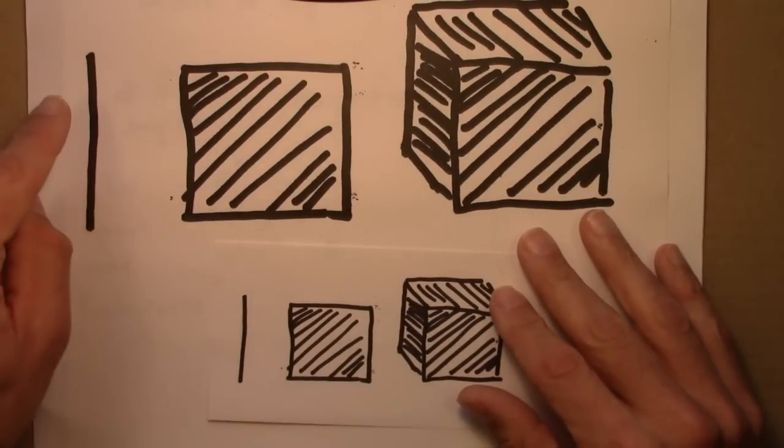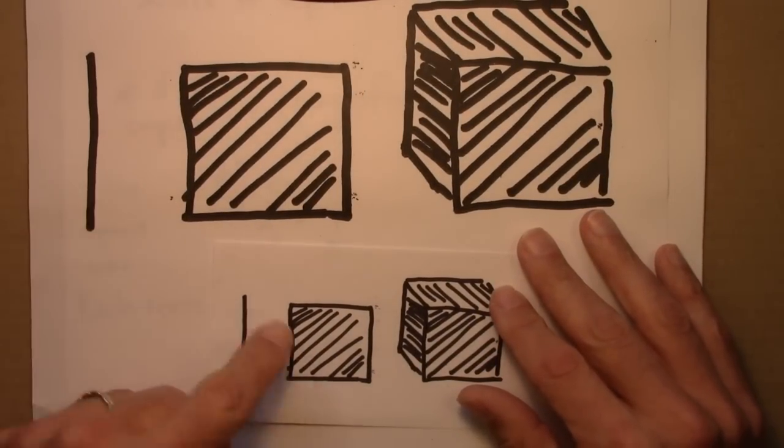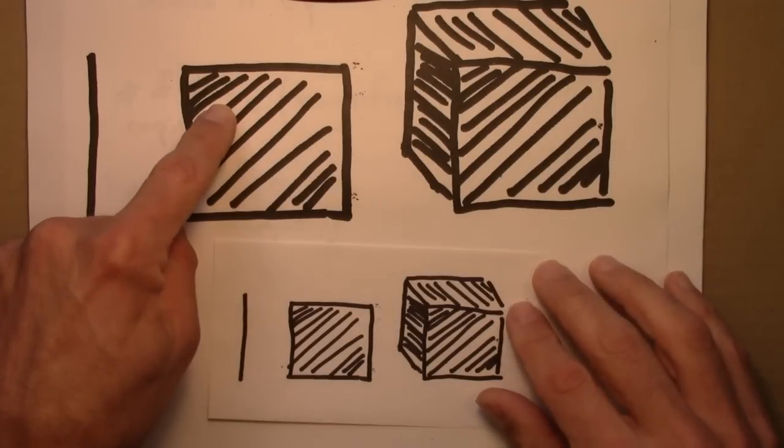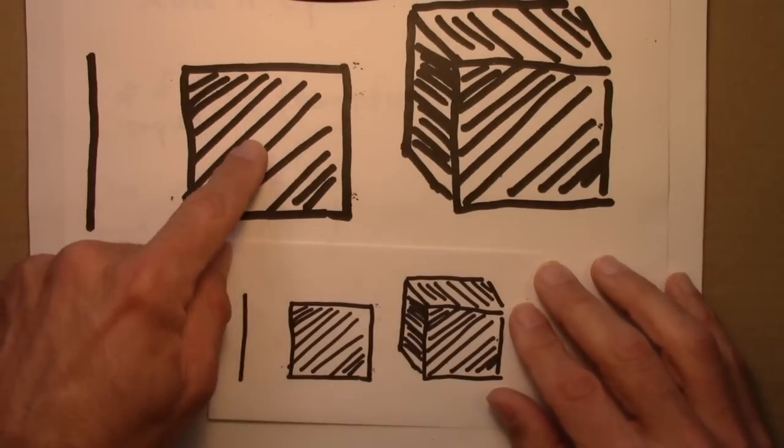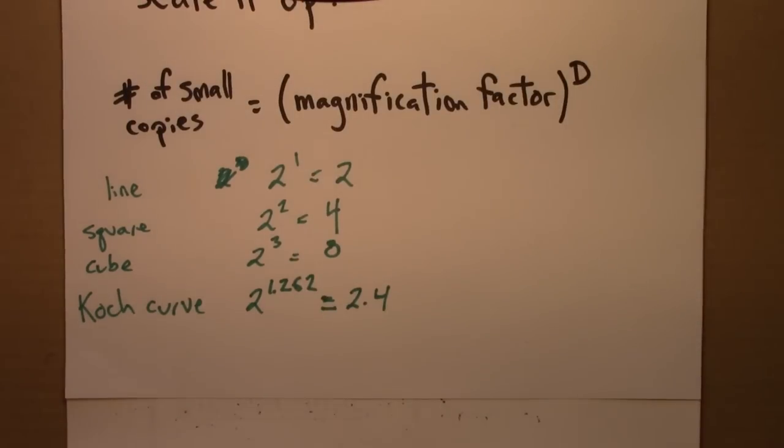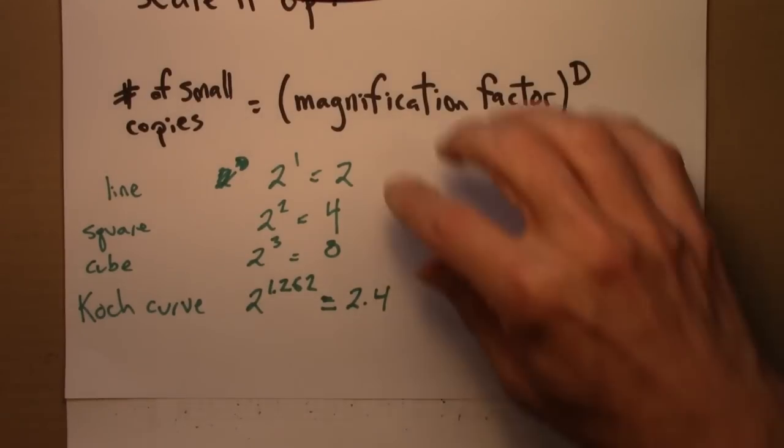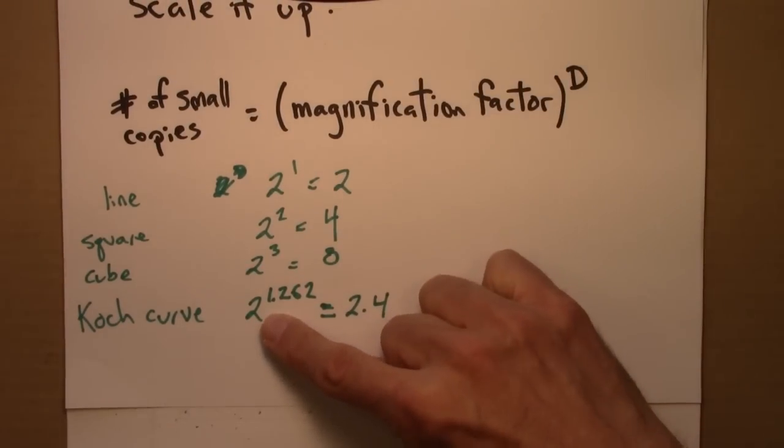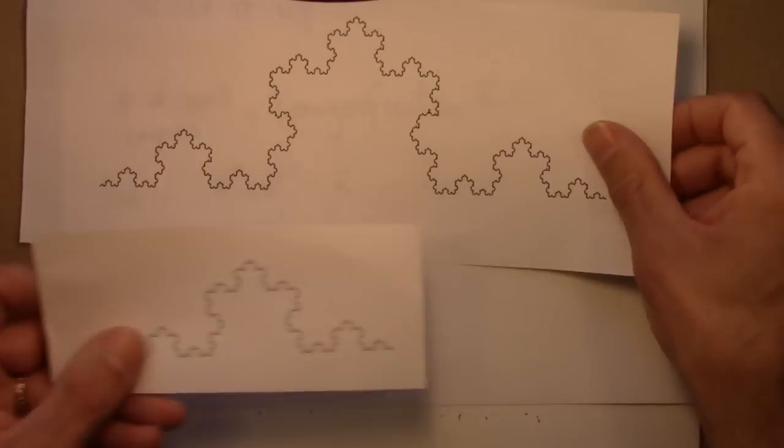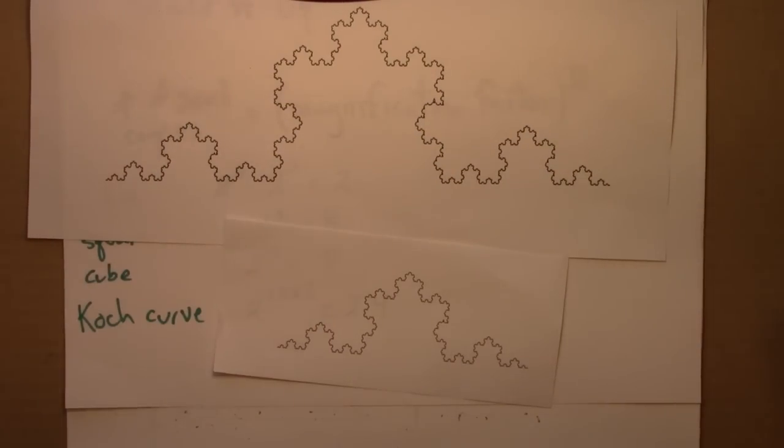Some shapes, when you double the size, they double. Some you double it, they go up by 2 to the 2, 4. Sometimes they go up by 8. And here's a shape that the behavior is 2 to the 1.262.